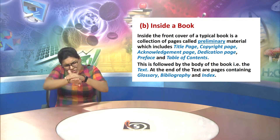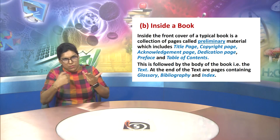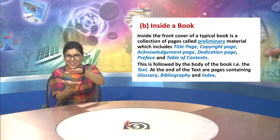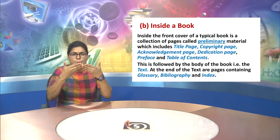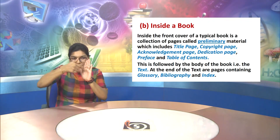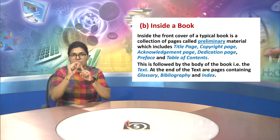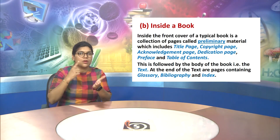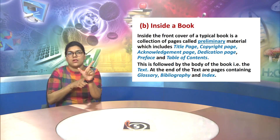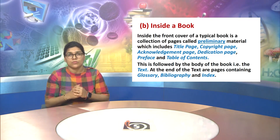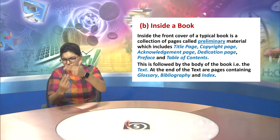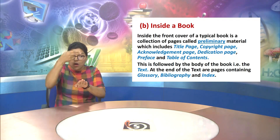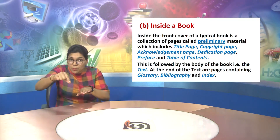Now we will understand what is inside a book. Inside the front cover of a typical book is a collection of pages called Preliminary Material, which includes the title page, copyright page, acknowledgement page, dedication page, preface and table of contents.